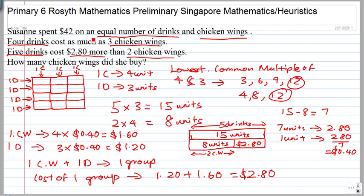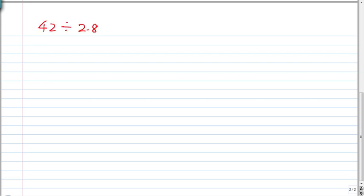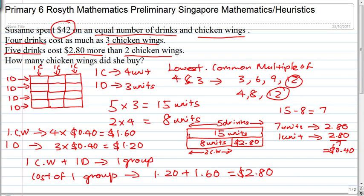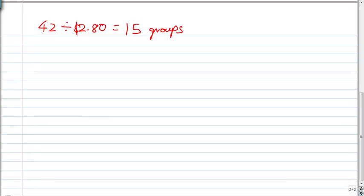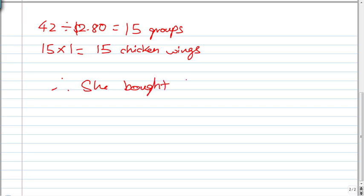I know that the total cost is $42. All I have to do to find the number of groups is $42 divided by $2.80, which gives you 15 groups. Each group has 1 chicken wing and 1 drink, so she bought 15 times 1 — that's 15 chicken wings. Therefore, she bought 15 chicken wings, and that's your answer.